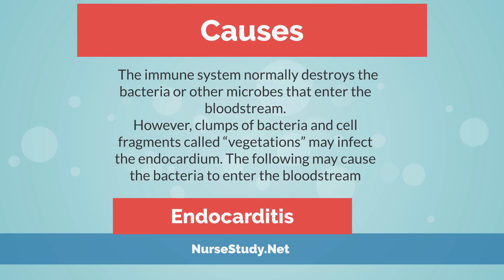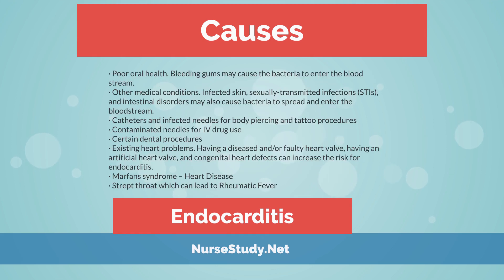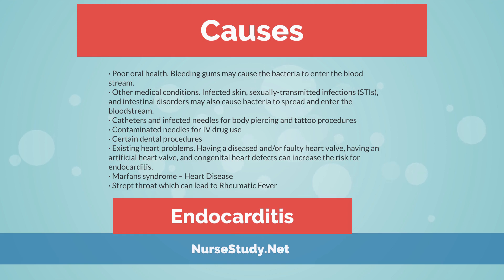The immune system normally destroys bacteria or other microbes that enter the bloodstream. However, clumps of bacteria and cell fragments called vegetations may infect the endocardium. The following may cause bacteria to enter the bloodstream: poor oral health — bleeding gums may allow bacteria to enter. Other causes include infected skin, sexually transmitted infections (STIs), intestinal disorders, catheters, infected needles for body piercing and tattoo procedures, contaminated needles for IV drug use, and certain dental procedures.